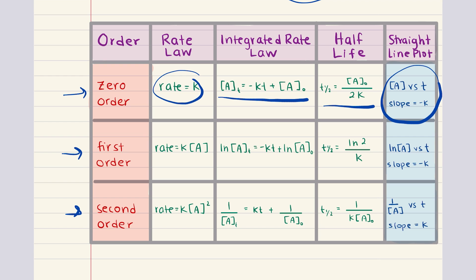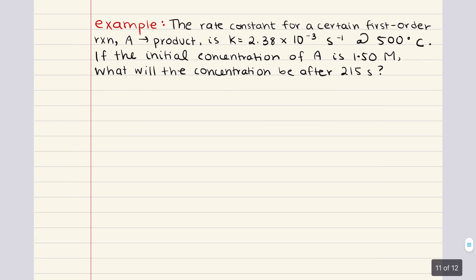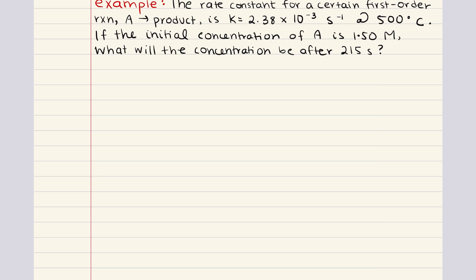The best way to learn how to use these expressions is to tackle practice problems, so let's tackle some together. This problem says: the rate constant for a certain first-order reaction is equal to 2.38 × 10⁻³ inverse seconds at 500°C. If the initial concentration of A is 1.5 M, what will the concentration be after 215 seconds? As a reminder, if you're asked to determine concentration after a certain amount of time, you must use an integrated rate law — and be sure to use the appropriate one.